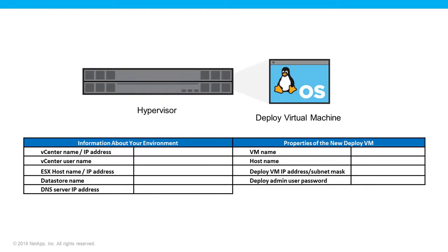Collect necessary information before you begin to help the installation proceed smoothly. Information about your environment includes the vCenter name or IP address, the vCenter username, the ESX hostname or IP address, the datastore name, the IP address of the DNS server, and information about the new ONTAP Select Deploy Virtual Machine including the VM name, hostname, the deploy VM IP address and subnet mask, and the deploy admin user password.